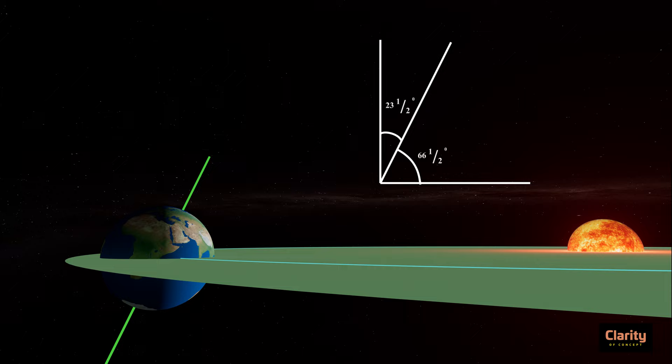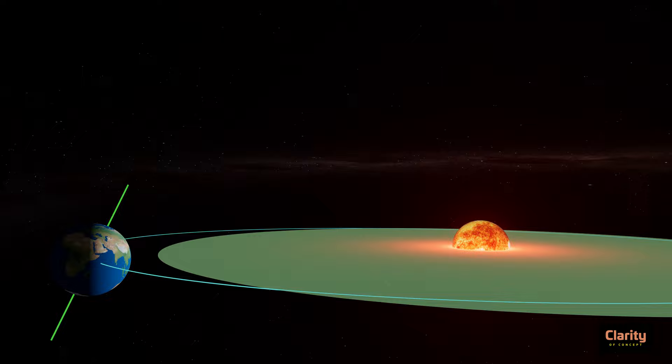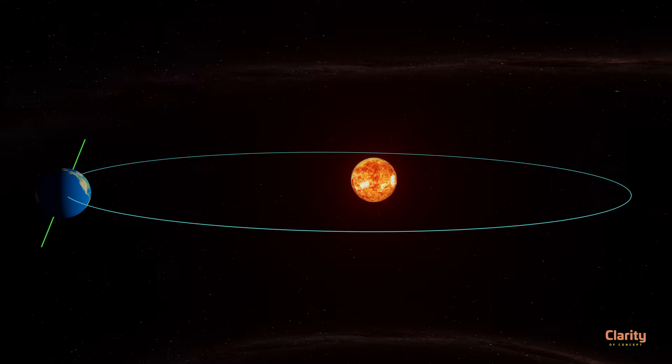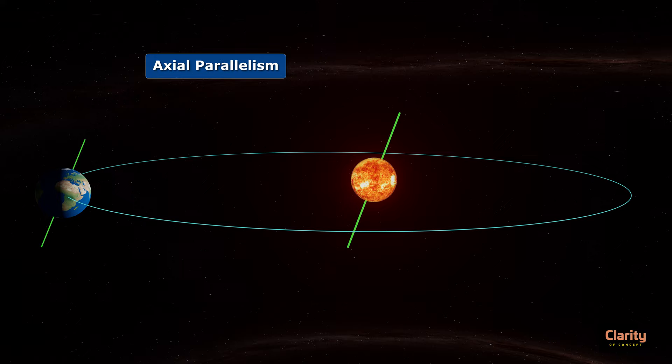There is one very special nature of this tilt — it remains the same throughout the revolution. Imagine earth revolved with the direction of its tilt continuously changing. This is not the case with earth. The direction of earth's axis remains unchanged throughout the revolution. This is called axial parallelism. Because of this, for some part of the year northern hemisphere faces towards the sun, and for some part southern hemisphere faces towards the sun.